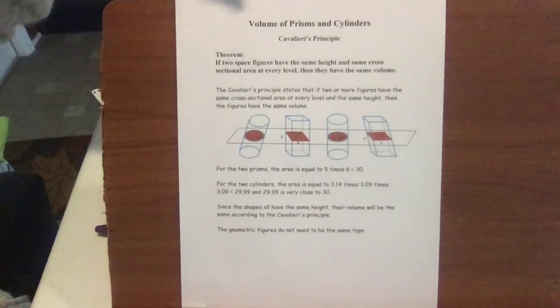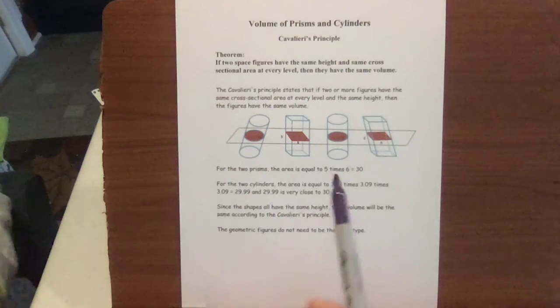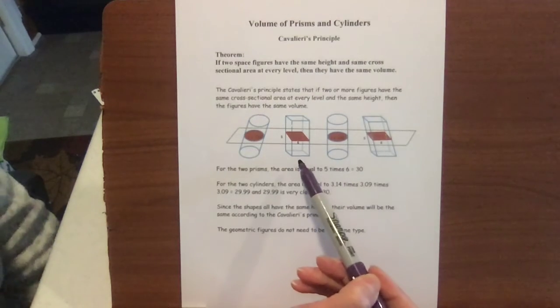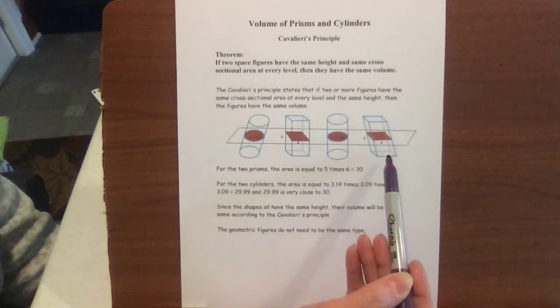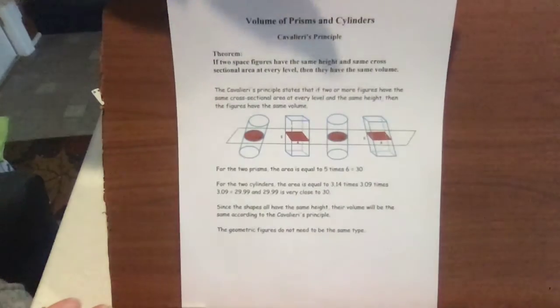That's what Cavalieri's Principle means, and it doesn't matter whether or not these are upright, meaning they are right prisms and right cylinders, or if they're oblique, meaning they're leaning. That's just Cavalieri's Principle.